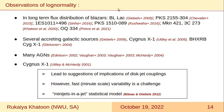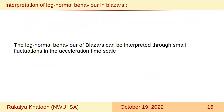The fast variability is produced in the relativistic jet through the additive process, which is contrary to the multiplicative process connected to the accretion disk. Such a model can explain the log-normal flux distribution in blazars through the summation of emission from a large collection of mini-jets which are randomly oriented in the relativistic jet. However, while the mini-jet model can explain the log-normal flux distribution, the long-term non-linearity in the light curve is difficult to accommodate. Therefore, we present an alternate interpretation by introducing small fluctuations in the particle acceleration timescale.